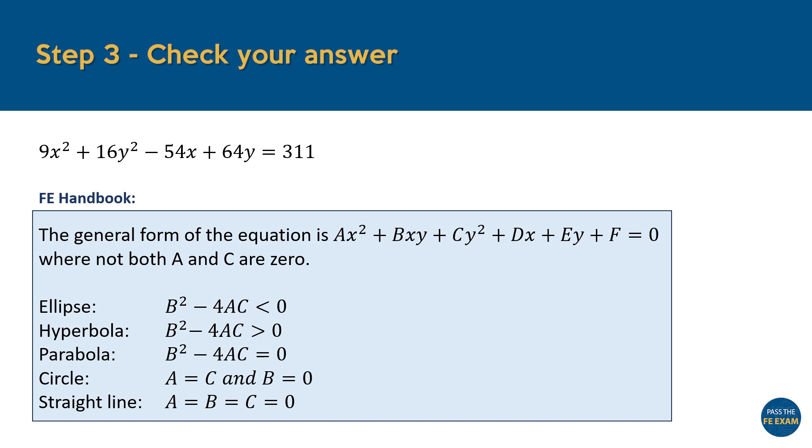To demonstrate how these conditions work, let's use the criteria for an ellipse to verify our answer. According to the general form provided in the FE handbook, we identify the coefficients a, b, and c. In this question, b is equal to 0, as there is no xy term. And additionally, a is equal to 9, and c is equal to 16.